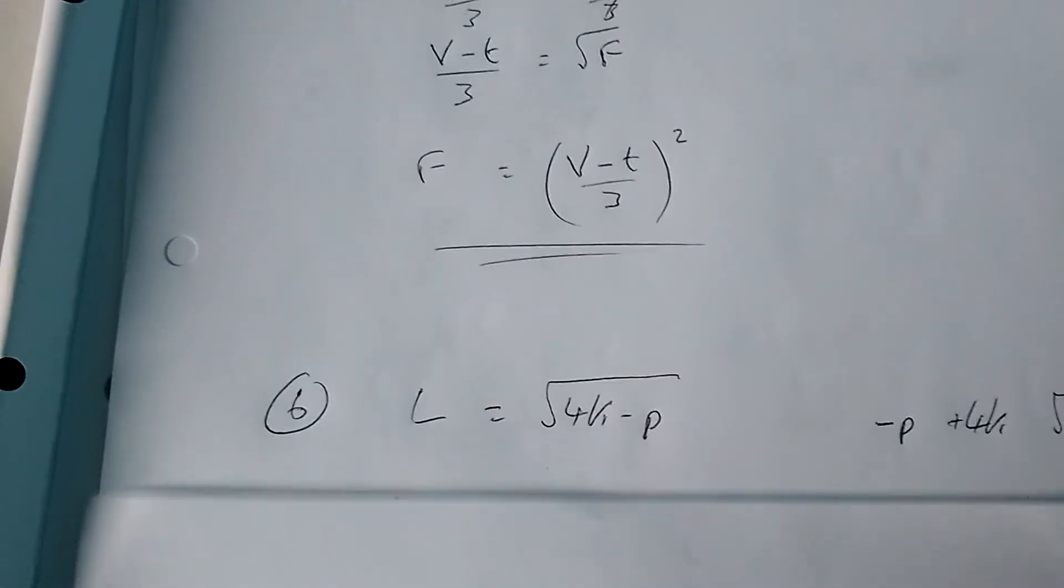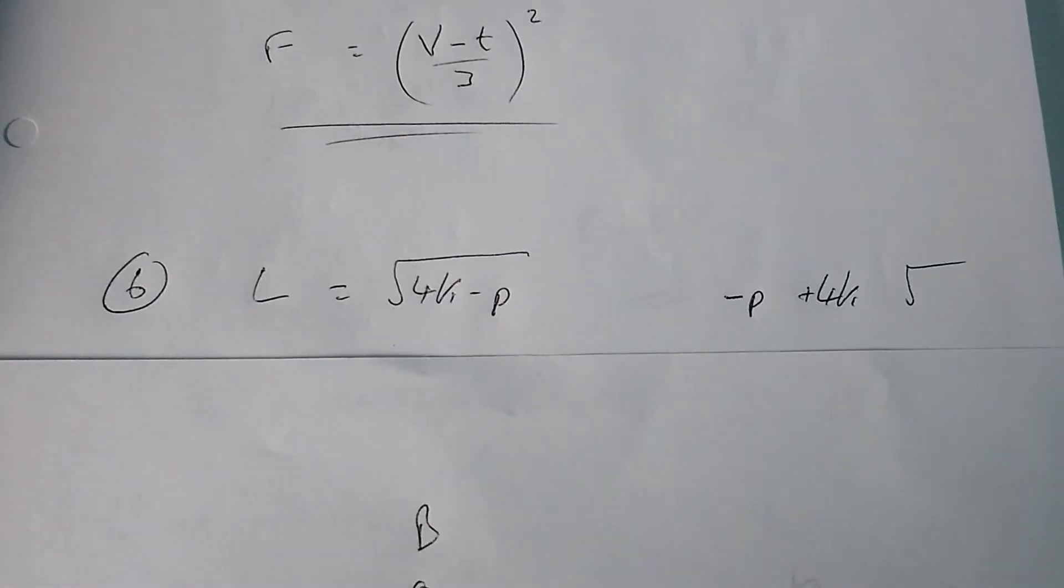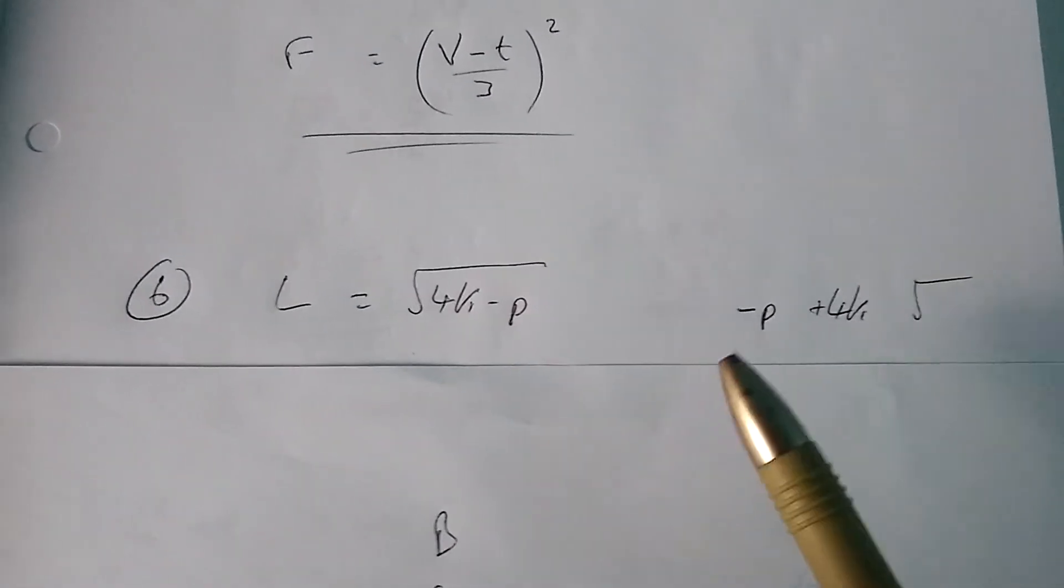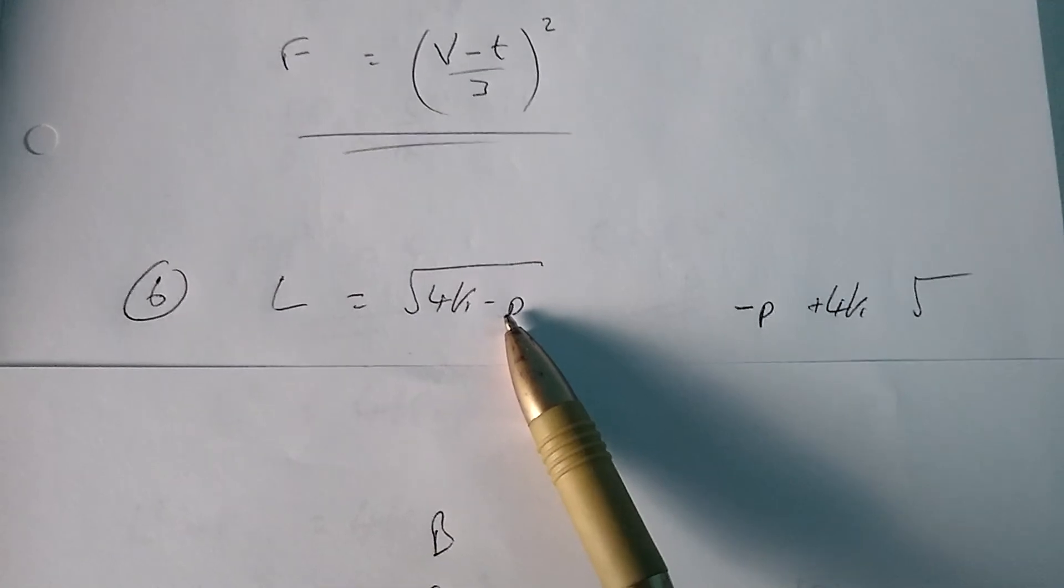Question number six. So we need to make p the subject of l equals the square root of 4k minus p. So first of all, I'm really multiplying p by negative one,